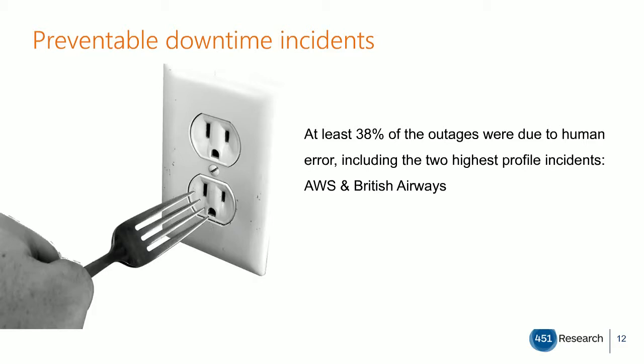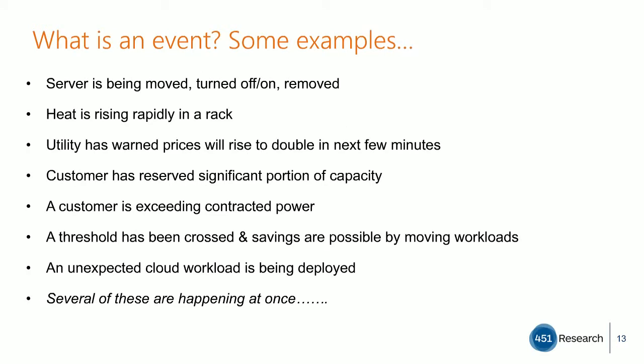Oftentimes it's management and operational processes that are lacking, and there's a lack of visibility into operations in real time that enables things to escalate. What is an event? Here are just some examples: servers being moved or turned off and on, a thermal issue in a rack or row, customers being provisioned on IT requirements. Typically several of these things are happening at once, which can make it highly chaotic. So if an incident does occur, the ripple effects can be dramatic, and resolving those to reduce the effects of an outage is problematic, to say the least.